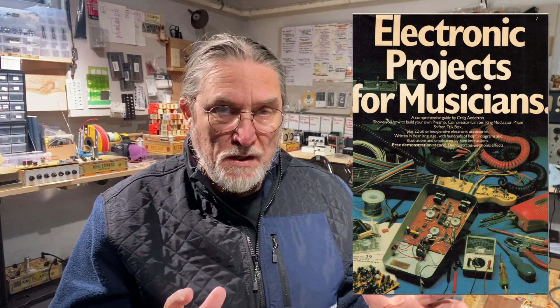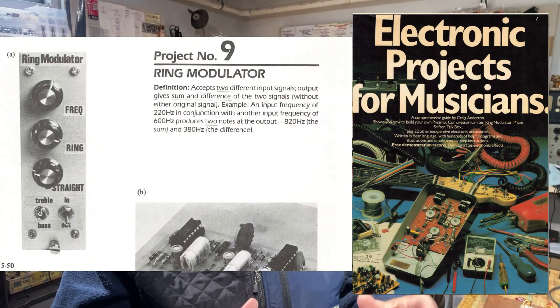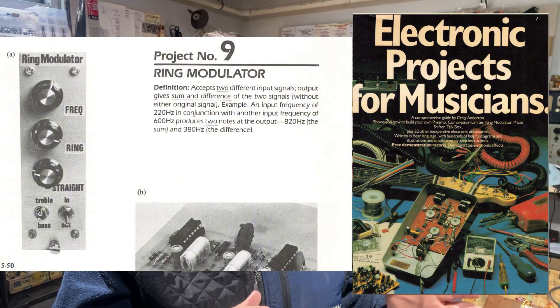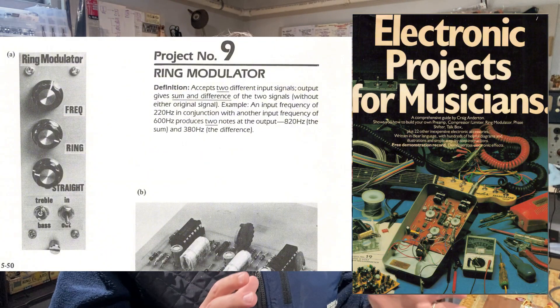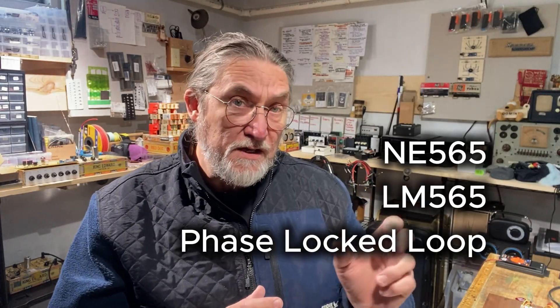Now for example, Craig Anderton's fantastic book, Electronic Projects for Musicians, he builds a ring modulator in Project 9, or as he describes it, a balanced modulator, but he's using a special purpose chip, namely the NE565 or the LM565 phase lock loop.